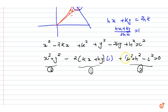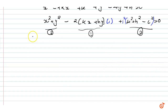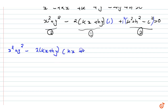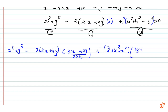We substitute this into the curve equation. We replace the 1 with the expression, squaring where needed to match degrees. This gives us: x² plus y² minus 2kx plus hy times (hx plus ky divided by 2hk) as the first term, plus h² plus k² minus c² times (hx plus ky divided by 2hk)² equals zero.